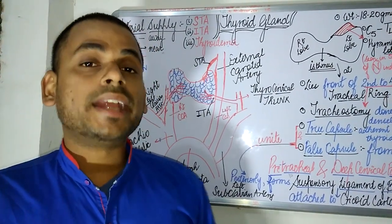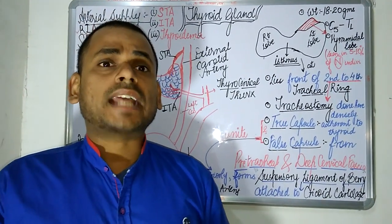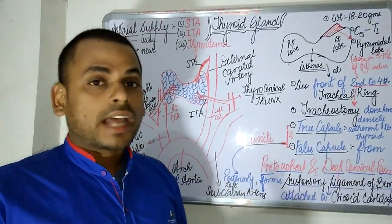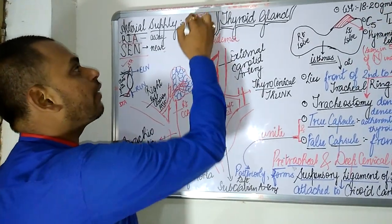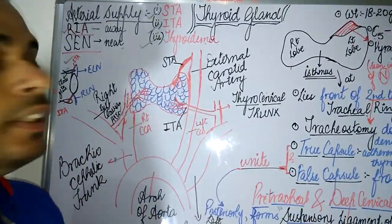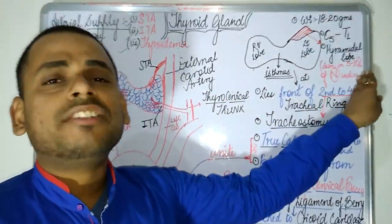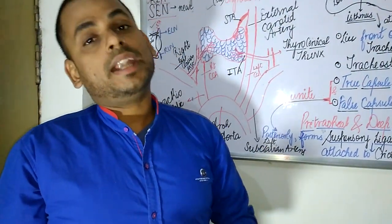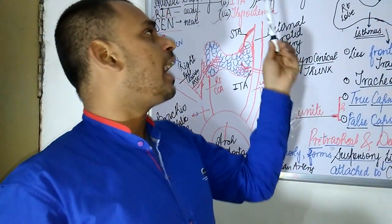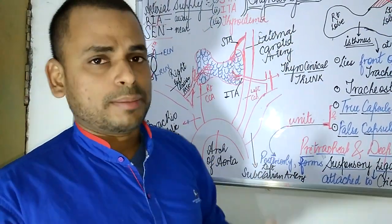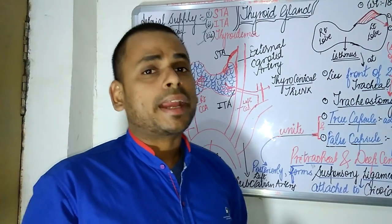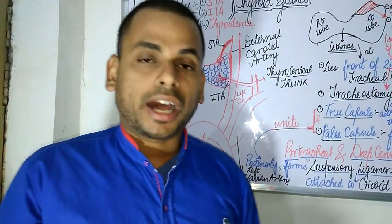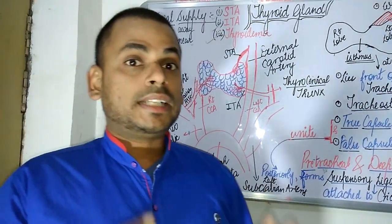The thyroid gland is richly supplied with blood vessels since it has to secrete its hormones. The blood vessels supplying the thyroid gland are the superior thyroid artery, the inferior thyroid artery, and the thyroidea ima. The thyroidea ima is also found in only 5 to 10 percent of individuals, and it may arise from either the brachiocephalic trunk or the arch of the aorta.